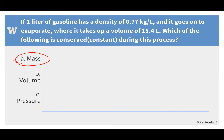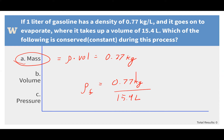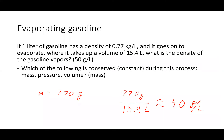One of the multiple choice questions this week asked about what quantity is conserved when a liter of gasoline evaporates. We think about mass — calculated as density times volume — so that's 0.77 kilograms. When it evaporates, it takes up a larger volume. The new density of the evaporated gasoline is that same mass divided by the new volume, giving 50 grams per liter.